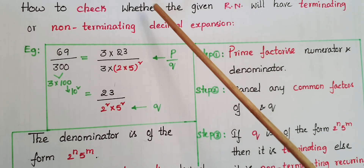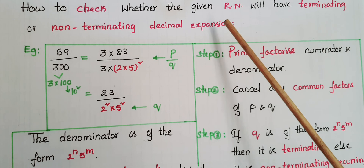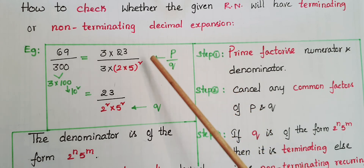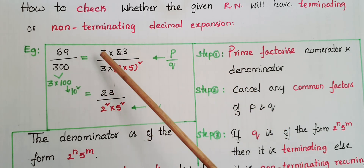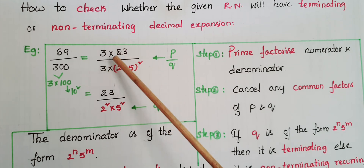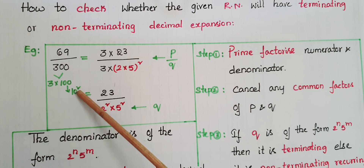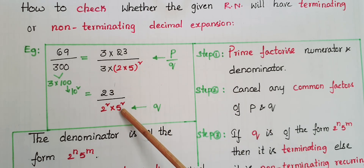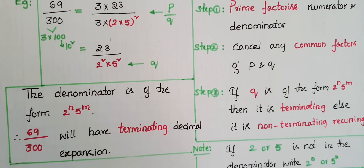To check whether a given rational number will have terminating or non-terminating decimal expansion: if the denominator is in the form 2 to the power of n into 5 to the power of m, then the rational number has a terminating decimal expansion. If not, then it has non-terminating decimal expansion. For example, 69 by 300: prime factorize as 3 into 23 by 3 into 100, which is 3 into 2 into 5 whole squared. Cancel the 3s: gives 23 by 2 squared into 5 squared. The denominator is in the form 2^n into 5^m, therefore 69 by 300 has a terminating decimal expansion.